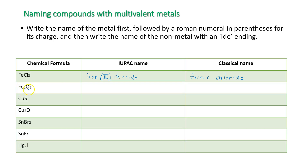For Fe₂O₃: oxygen generally has a charge of negative 2. With 3 oxygens, that's a total charge of negative 6. Since there are 2 irons, each iron needs a charge of plus 3 to balance it. So the IUPAC name is iron(III) oxide, and the classical name is ferric oxide.